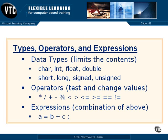Now we're going to start talking about data types, operators, and expressions in the C language. Data types actually limit the contents of an item. So if we have a variable, it could be a char — a character — an integer, a floating point, or a double precision floating point. A double is just a larger float with greater precision. We'll look at all of these in detail as we go through this section.